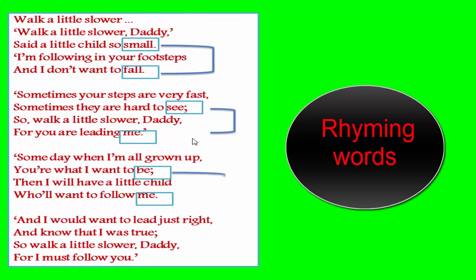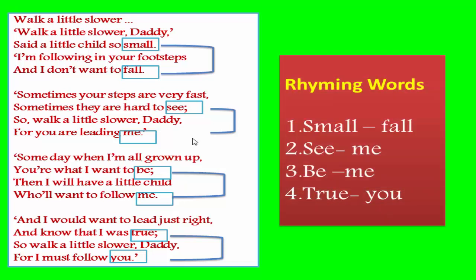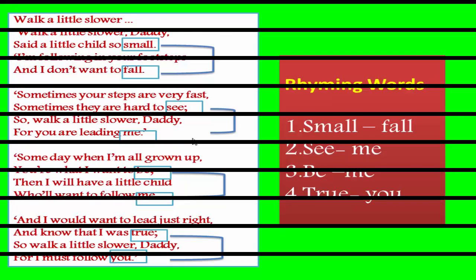In the last stanza, the ending words are right, true, daddy, and you. True and you are similar in their ending sounds, giving us the next rhyming pair: true and you. So in this poem we have four rhyming pairs: small/fall, see/me, be/me, and true/you.